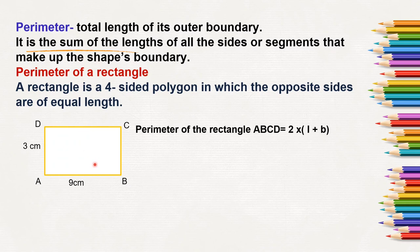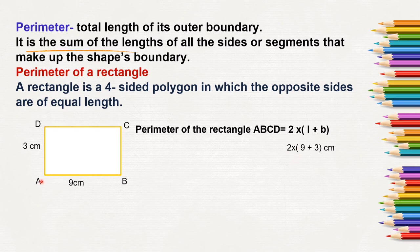Now, to find out the perimeter of rectangle ABCD, we know the two sides of the rectangle are of same length — the length and the breadth. We have to add the length and the breadth. So, 2 into — the length is 9 cm and the breadth is 3 cm. Instead of adding 9 plus 9 and 3 plus 3, we can add 9 plus 3 and multiply with 2.